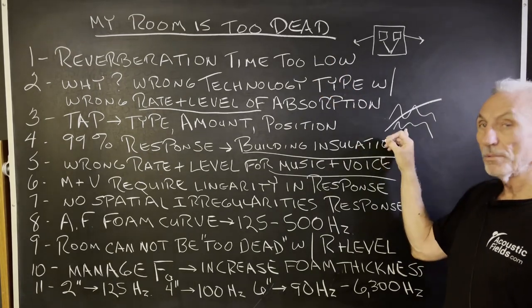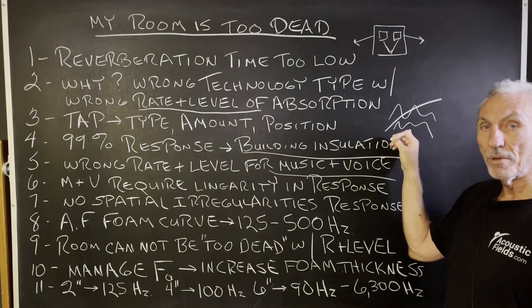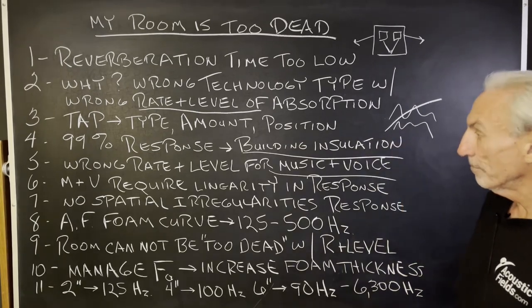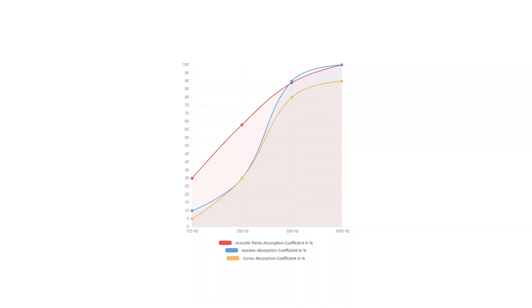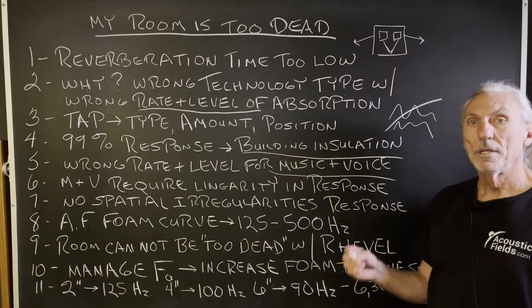My room is too dead. Well, you're using the wrong treatment type that has the wrong rate level of absorption for music and voice. Look at our foam curves. Here's a graph that you can see. You can go on our website in the about section of us. Scroll about halfway down and you'll see the foam curve. Look at the 125 to 500 region. Look at the competition. Big difference.